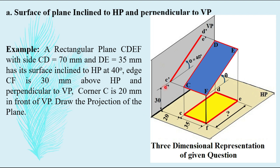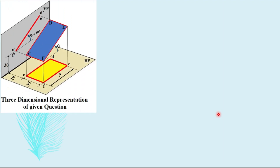In the three-dimensional representation of the question, due to the inclination of the plane, we don't know the exact length of the top view — because of the inclination it will be reduced from 70 mm, but by how much we don't know. So you cannot draw either view directly. The principle is to draw that view first where you get the true shape — the top view here would be a reduced shape.